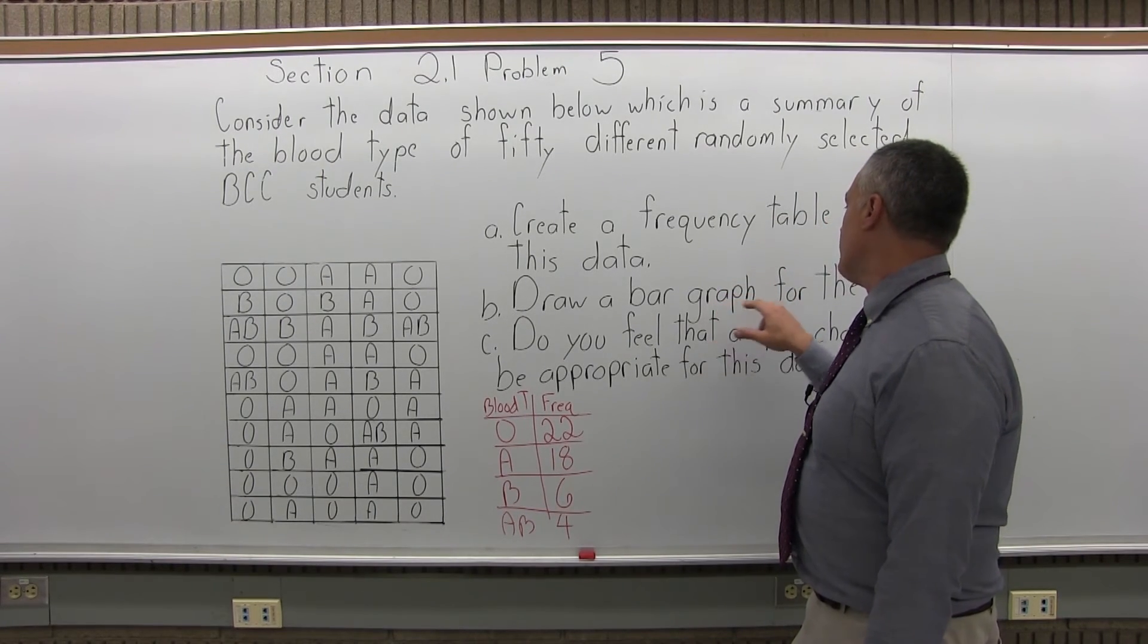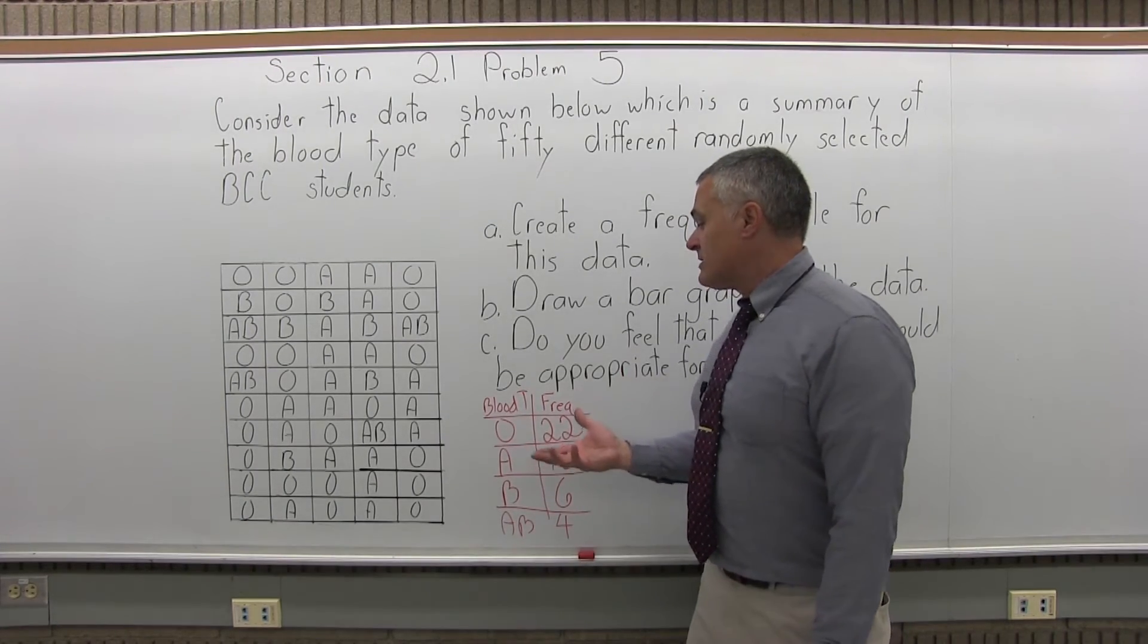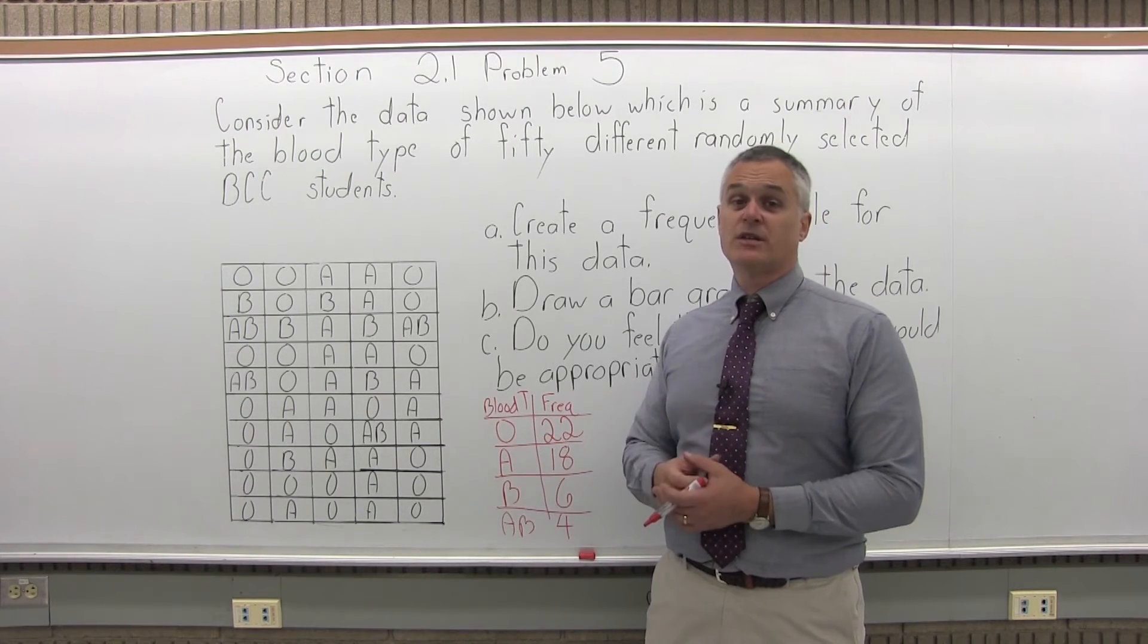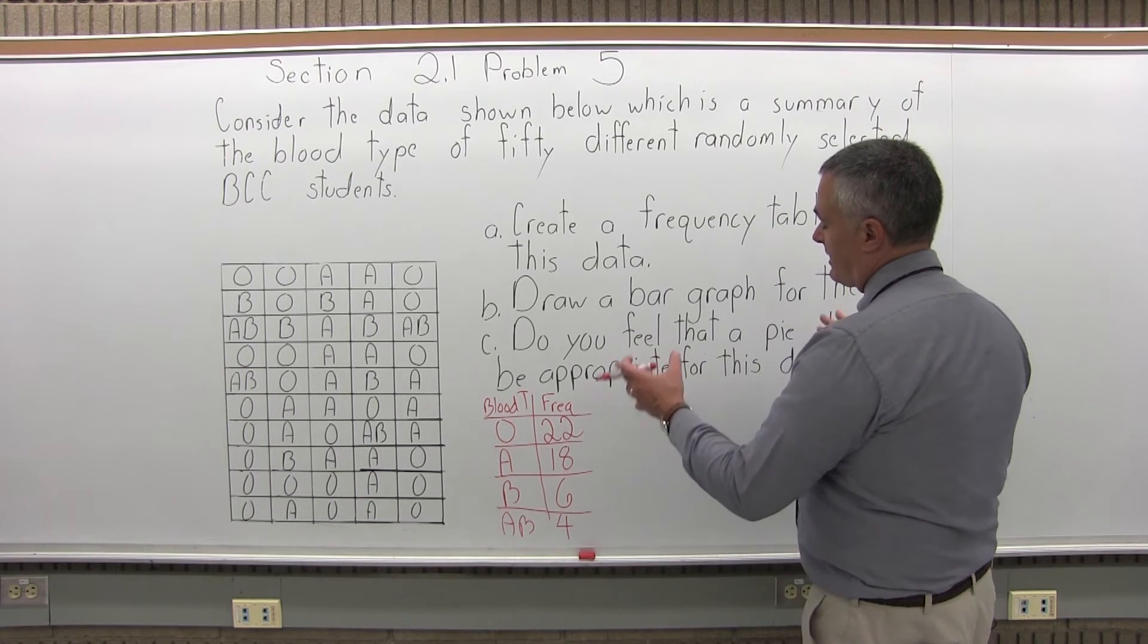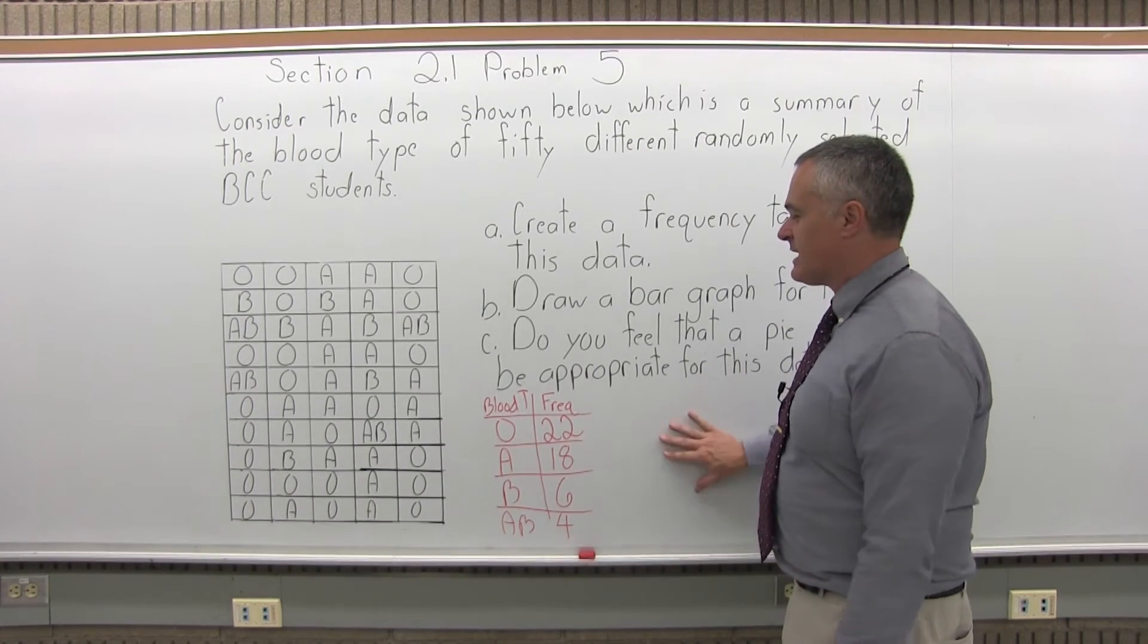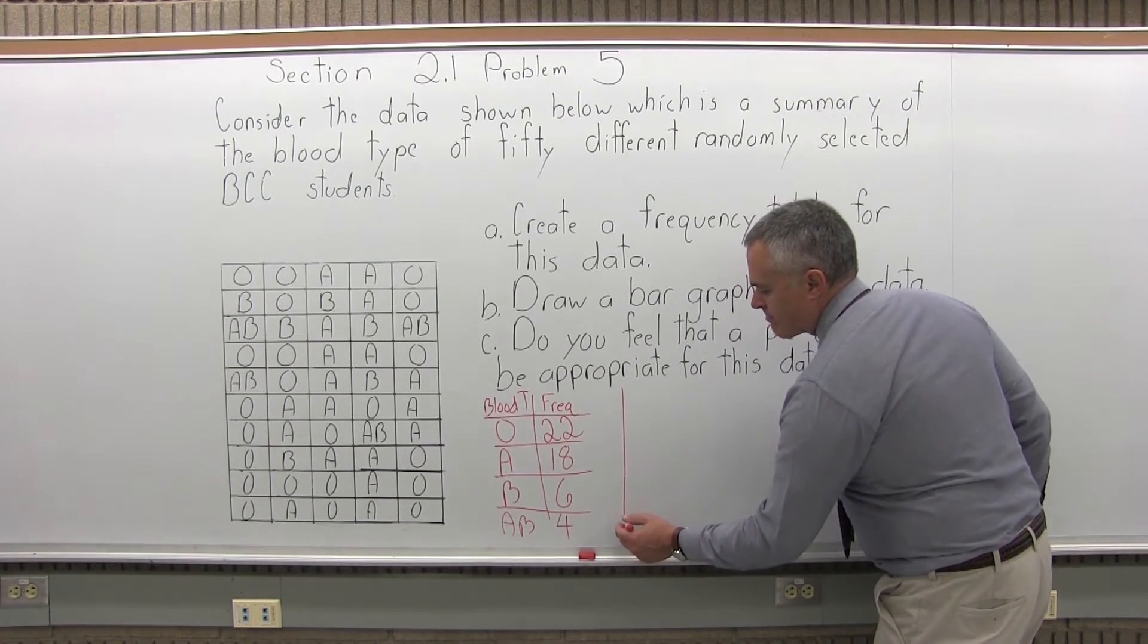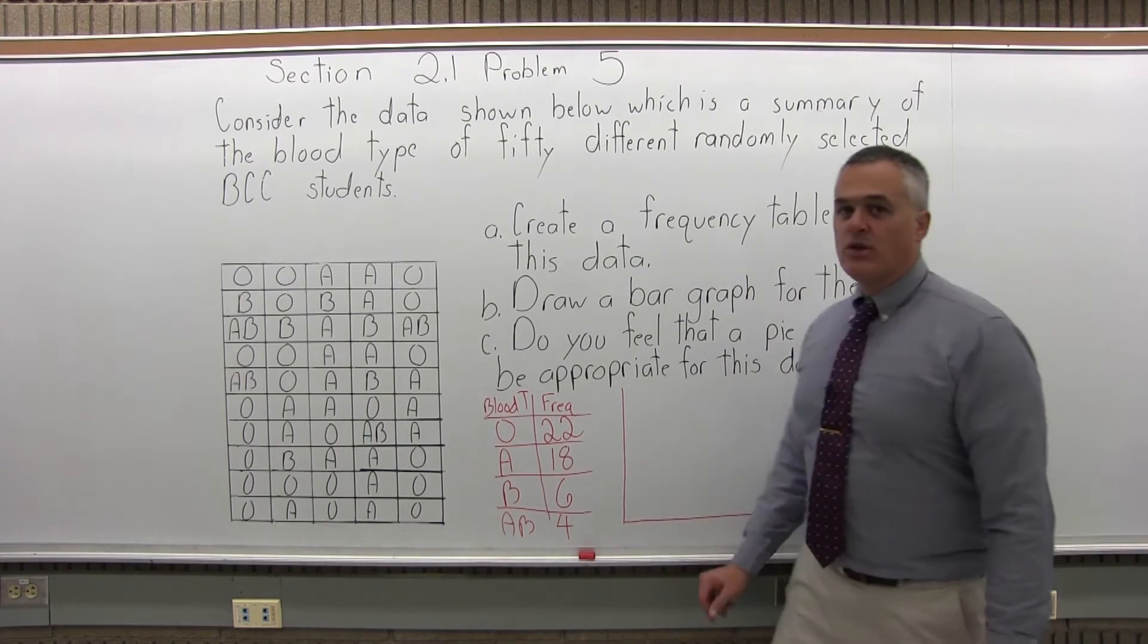Part B asks us to draw a bar graph for the data. So, again, our bars must be labeled. It must have a clearly labeled number scale. The bars can be drawn horizontally or vertically, and they should not touch. There should be a space in between them. Now, we have more space going side to side. It's more traditional to draw the bars vertically, but a horizontal bar graph would fit a little bit nicer on the space I have available on the whiteboard. So I'm going to go horizontally.